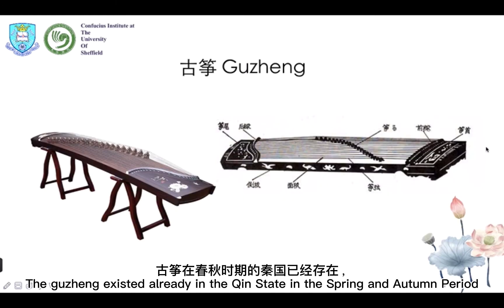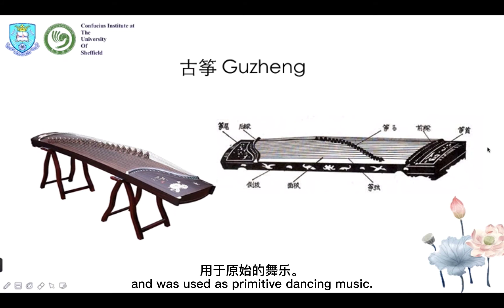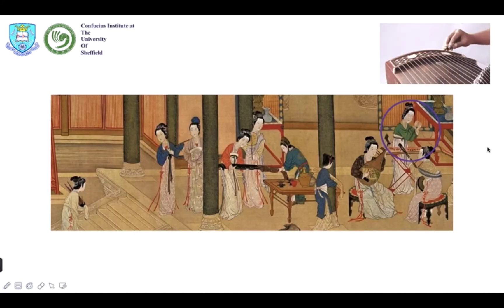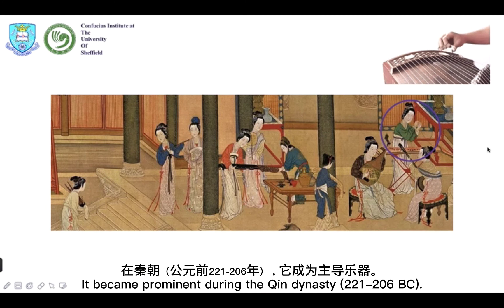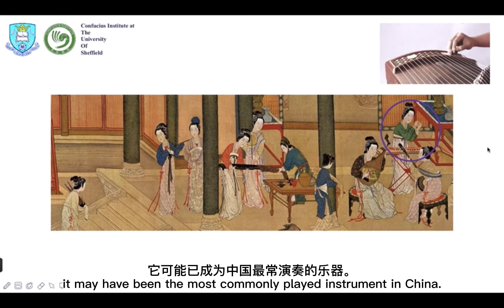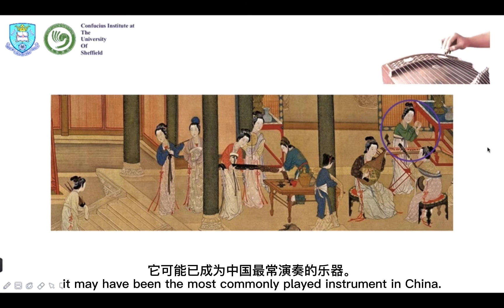The gu zheng existed already in the Qin state during the Spring and Autumn period and was used as primitive dancing music. The gu zheng has gone through many changes during its long history. It became prominent during the Qin dynasty, and by the Tang dynasty it may have been the most commonly played instrument in China.